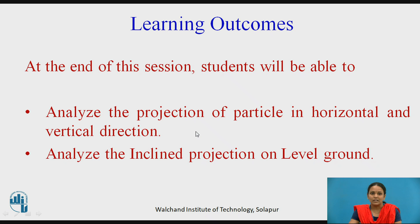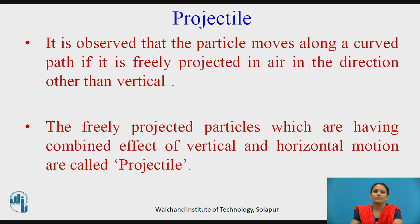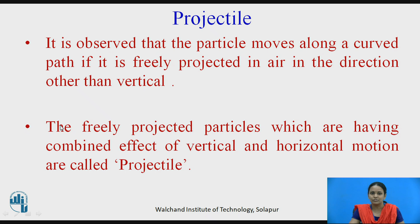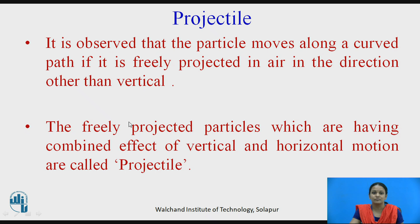Students will also be able to analyze inclined projection on leveled ground. Regarding projectile: it is observed that a particle moves along a curved path if it is freely projected in air in a direction other than vertical. Whenever you throw a particle upward, it has two directions — vertical and horizontal. A freely projected particle having the combined effect of vertical and horizontal motion is called a projectile.